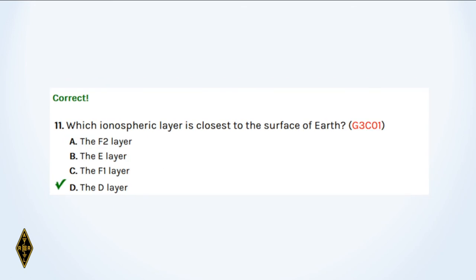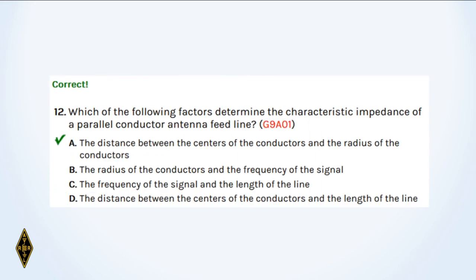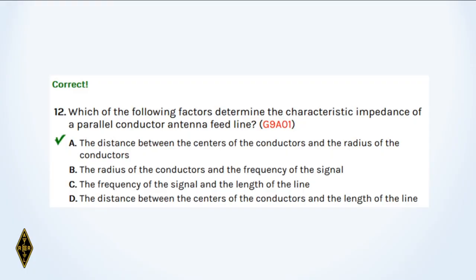And eleven: Which ionospheric layer is closest to the surface of the earth? That's the D layer. And twelve: Which of the following factors determine the characteristic impedance of a parallel conductor antenna feed line? We talked about ladder line and twin lead — 300 ohm twin lead for TV. It's how far apart the wires are and how big around the wires are: the distance between centers of the conductors and the radius of the conductors.